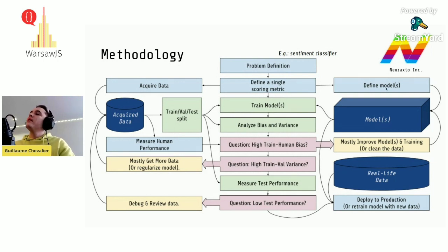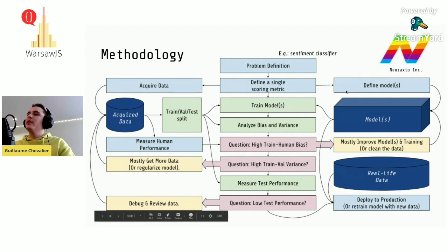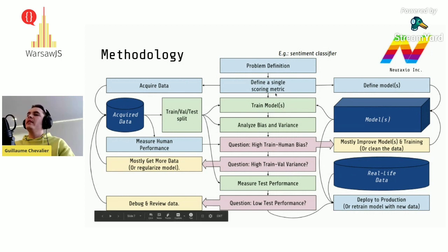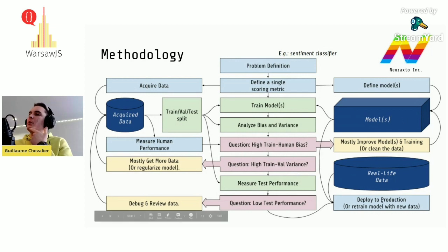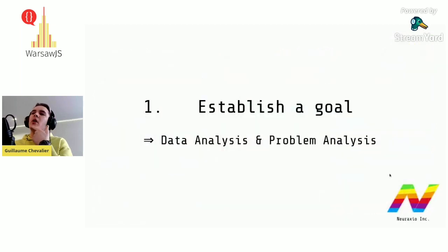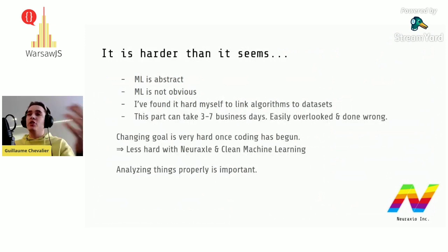Once the problem is well defined, you start acquiring and preprocessing your data so it can be presented to the neural network or machine learning algorithm. In parallel, you start coding the machine learning algorithms. At NeurAxio with our clients, most of the time we do the modeling part while clients provide data. We help format the data so data meets model in the middle, then train the model, analyze errors, and deploy to production with real-life data.